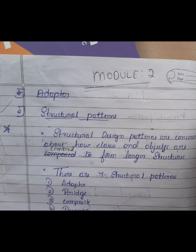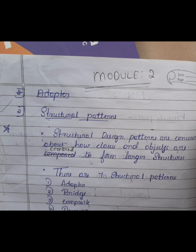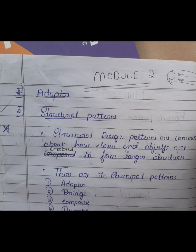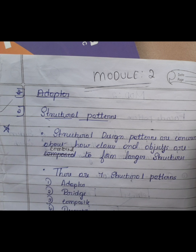I recommend studying these for those who want to score good marks. Focus on the intent and applicability — that's more than enough. For consequences and implementation, you can write the same thing in a different way. Almost the same explanation applies across each section.